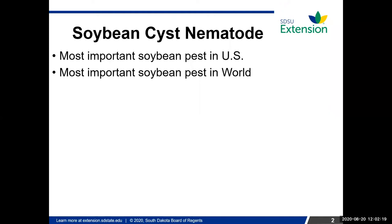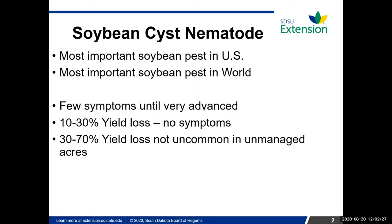In the U.S. alone it causes over one and a half billion dollars in yield loss. The silent yield robber mentality comes from the fact that oftentimes when you pull up to a field you're not going to see many symptoms until the SCN numbers get very advanced. Often you're going to receive a 10 to 30 percent yield loss and not see any symptoms — the plants look green, healthy, and uniform with nice canopy closure. When SCN goes unmanaged and numbers build up, you could have between a 30 to 70 percent yield loss.